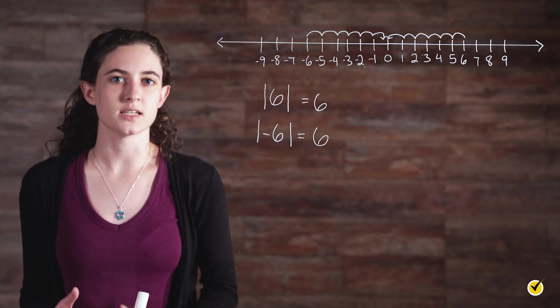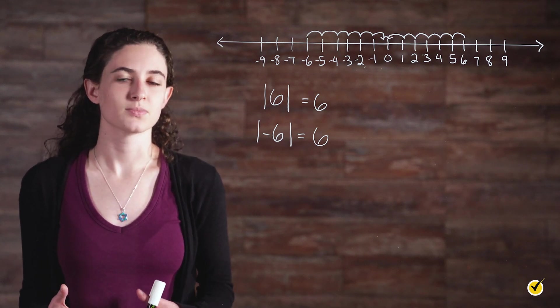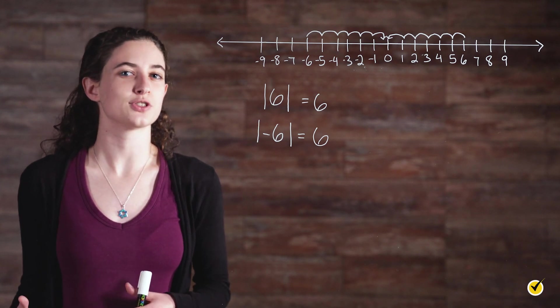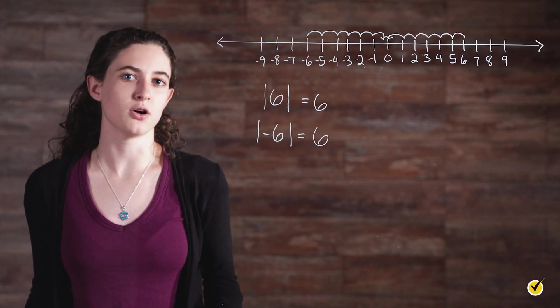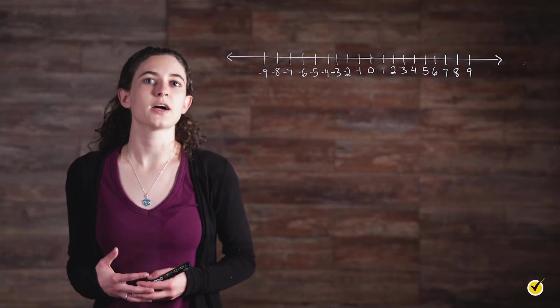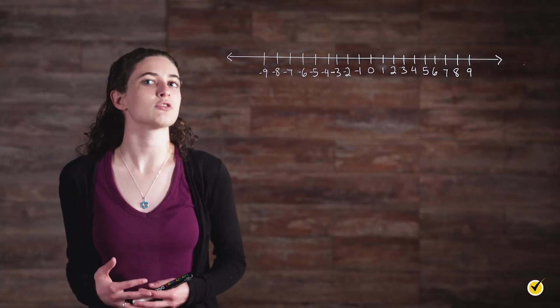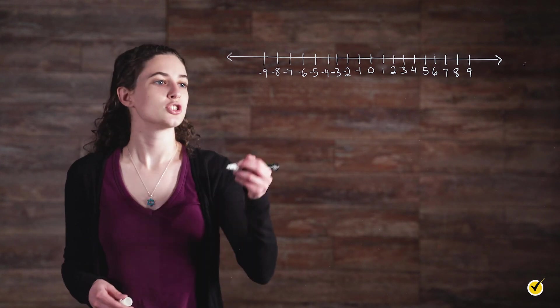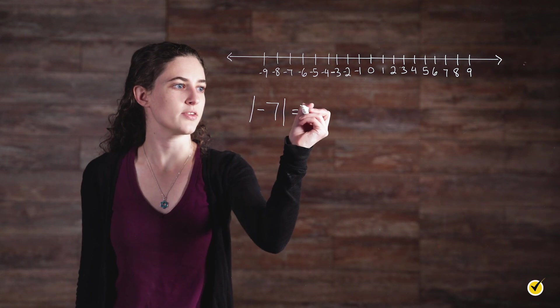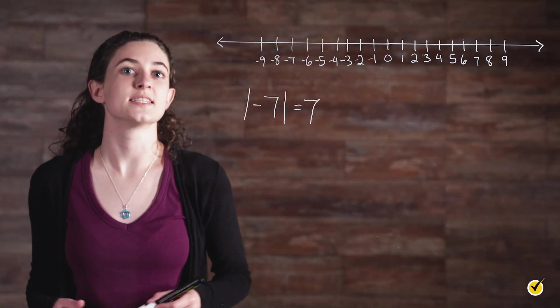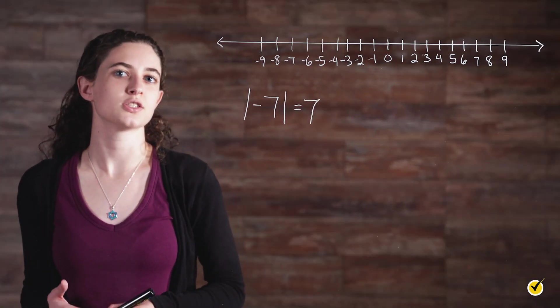When we talk about distance, the direction doesn't matter. In everyday language, we wouldn't say, for instance, the grocery store is negative one mile away. We'd simply say the grocery store is a mile away. Similarly, on the number line, we are simply counting distance without specifying direction. So the absolute value of negative seven is equal to seven. Literally, this translates as negative seven is seven units away from zero.